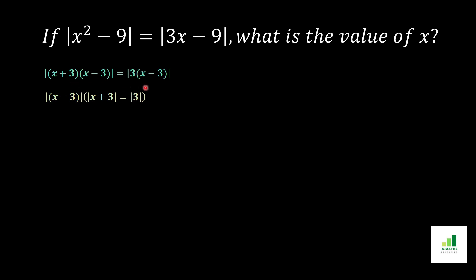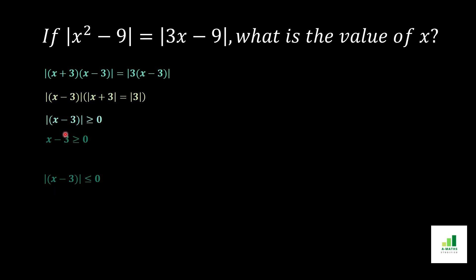Now we will solve for |x - 3|. Two conditions exist: the first condition is x - 3 ≥ 0, which gives us x ≥ 3. We move the -3 to the other side of the equation and get x ≥ 3.